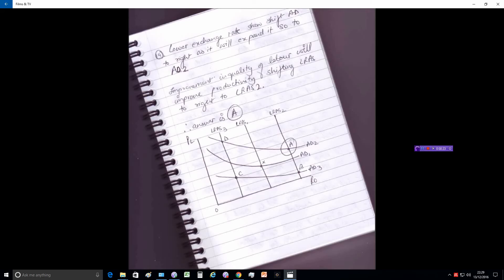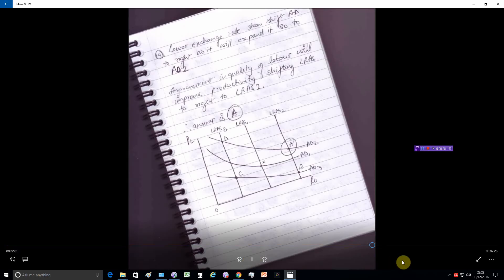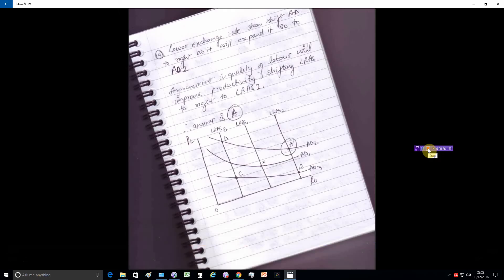Hence the net exports should be increasing, we should expand the AD, so AD will shift to AD2. Improvement in the quality of labor will improve productivity, so the same people are actually producing more. That should shift our LRAS to the right, which is to LRAS2. Hence the point or the answer should be A.